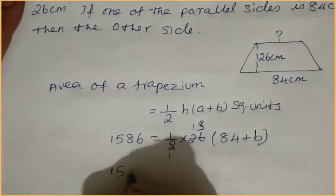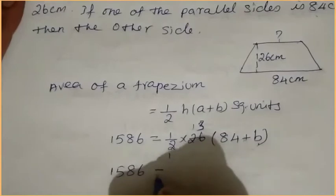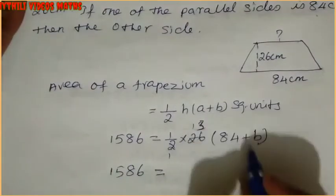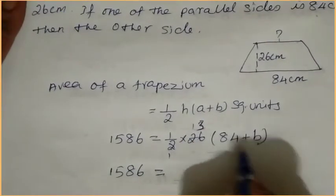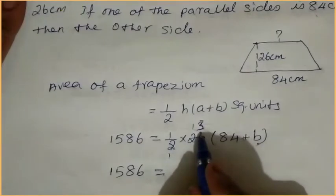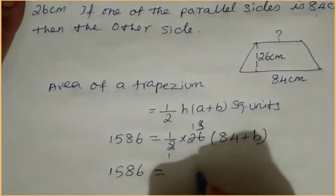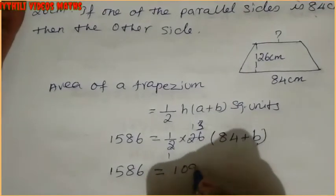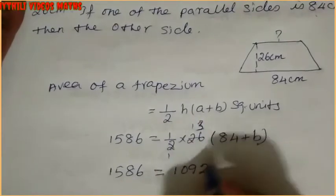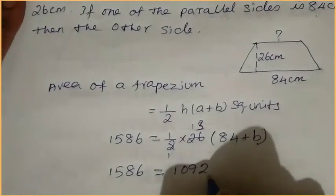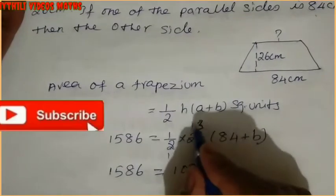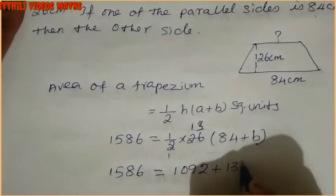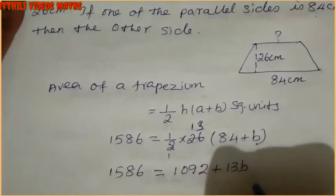So 1586 equals 13 into (84 + B). Now expand: 13 into 84 equals 1092, plus 13 into B equals 13B. So 1586 equals 1092 plus 13B.